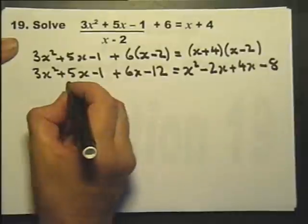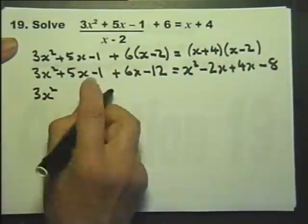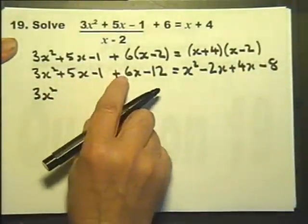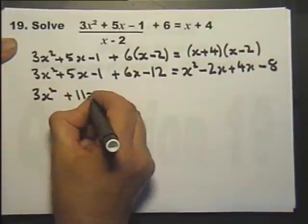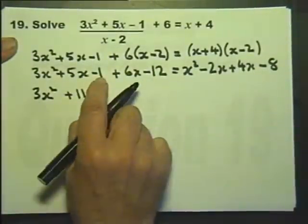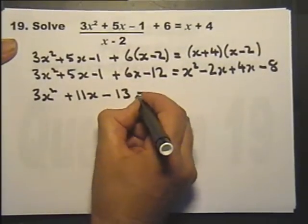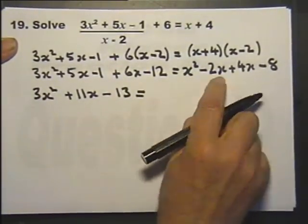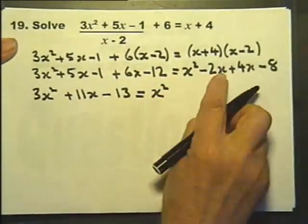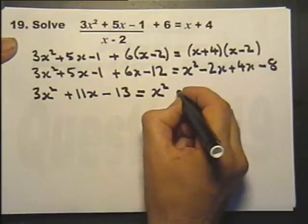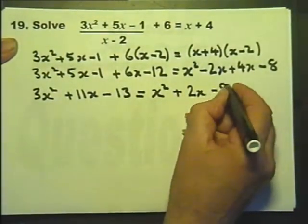I think I'll do it very carefully. On this side, this is the only x squared term. I've got 5x and 6x, and I've got minus 1 and minus 12. On this side, this is the only x squared term. Then I've got plus 2x from there and the minus 8.